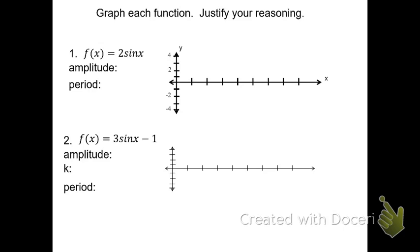Now let's look at two sine graphs. The first function: f of x equals 2 sine of x. The amplitude here is 2, the frequency is 1, which means the period is 2π divided by 1, which is 2π. There is no vertical shift because nothing is added outside of the sine, so k is 0.